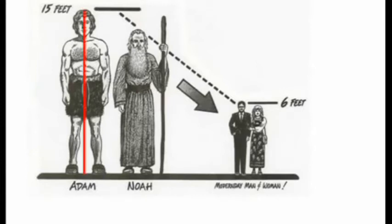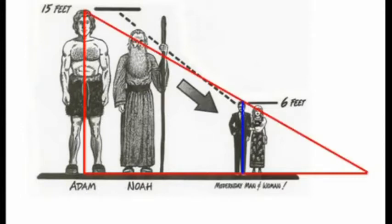First, draw a vertical line representing Adam's 15-foot height. Now draw a horizontal line representing the ground. Draw another vertical line representing the 6-foot height of modern man. Now draw a line from Adam's head through modern man's head and extending to the ground. This creates a triangle.